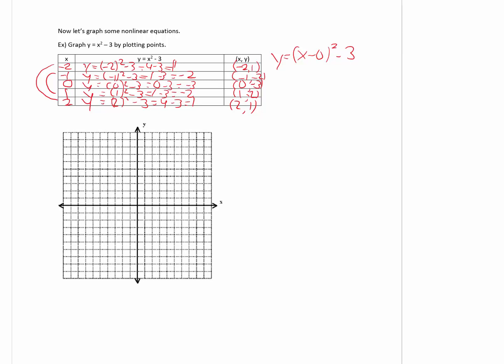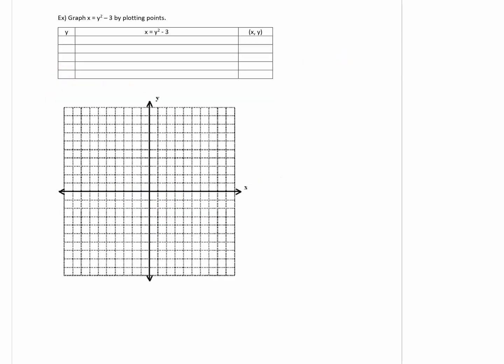Let's plot these five points now. You can notice it's not a line. Let's connect the dots and see what this picture looks like. It's a U-shaped picture — this is what is called a parabola. Notice one of the variables, which is x in this case, is squared, and the other variable, which is y, is to the first power.